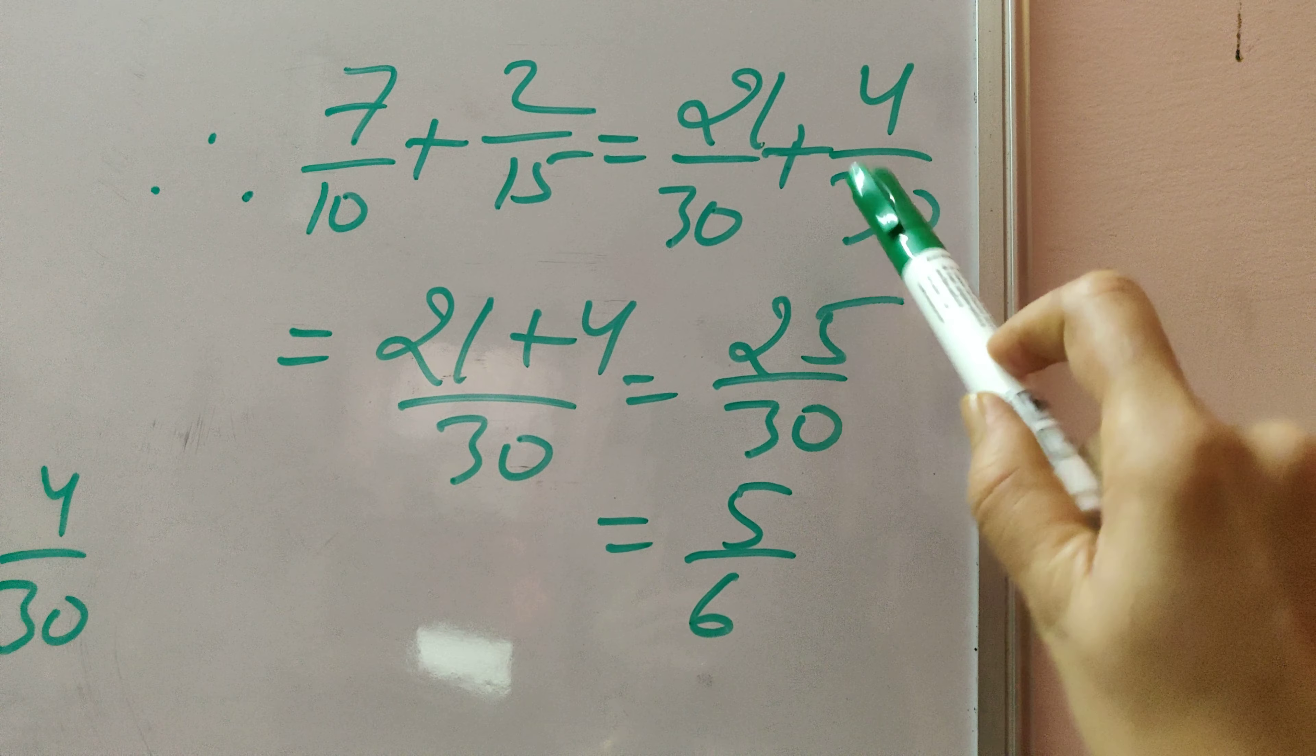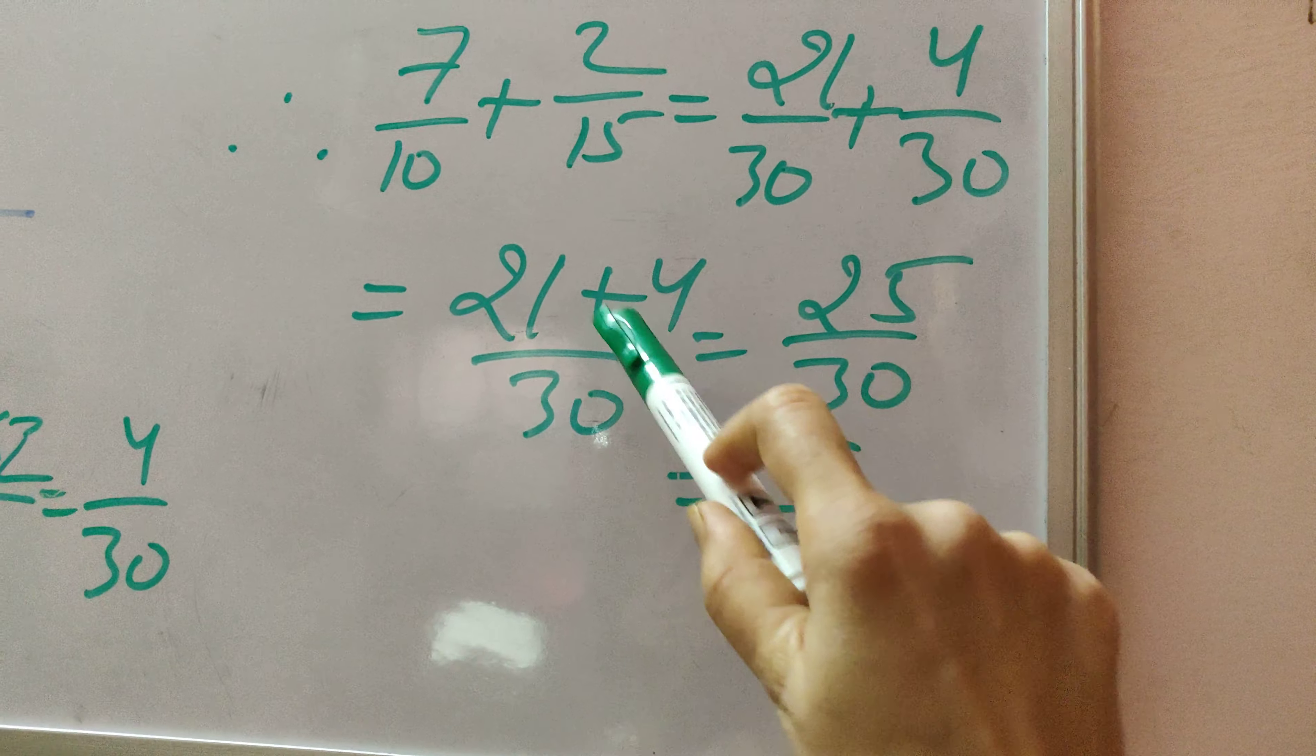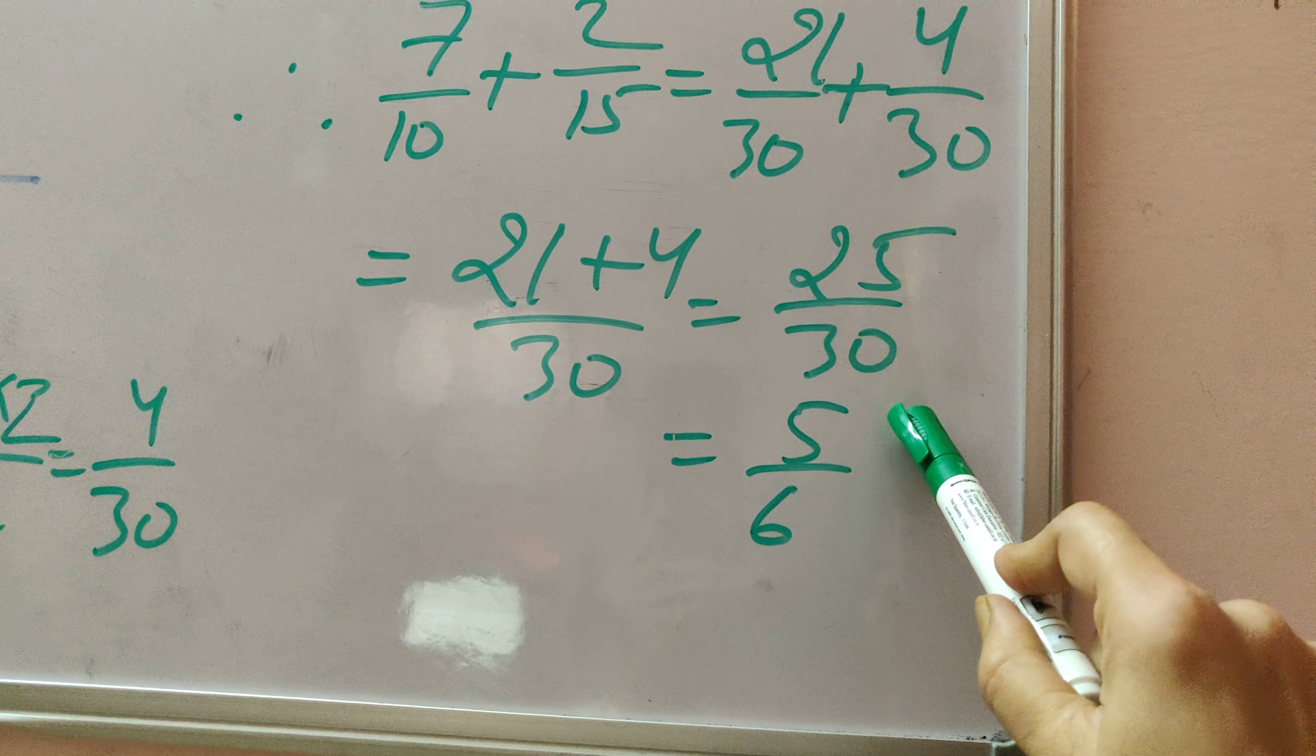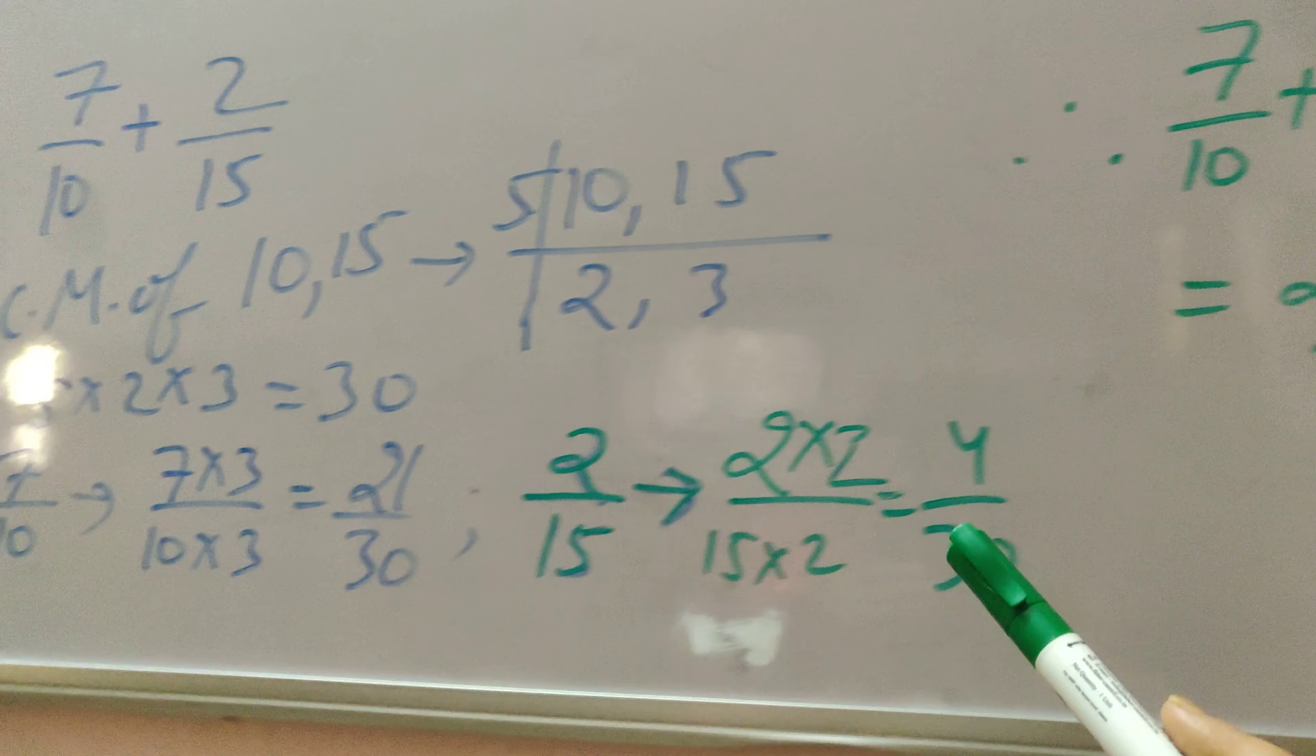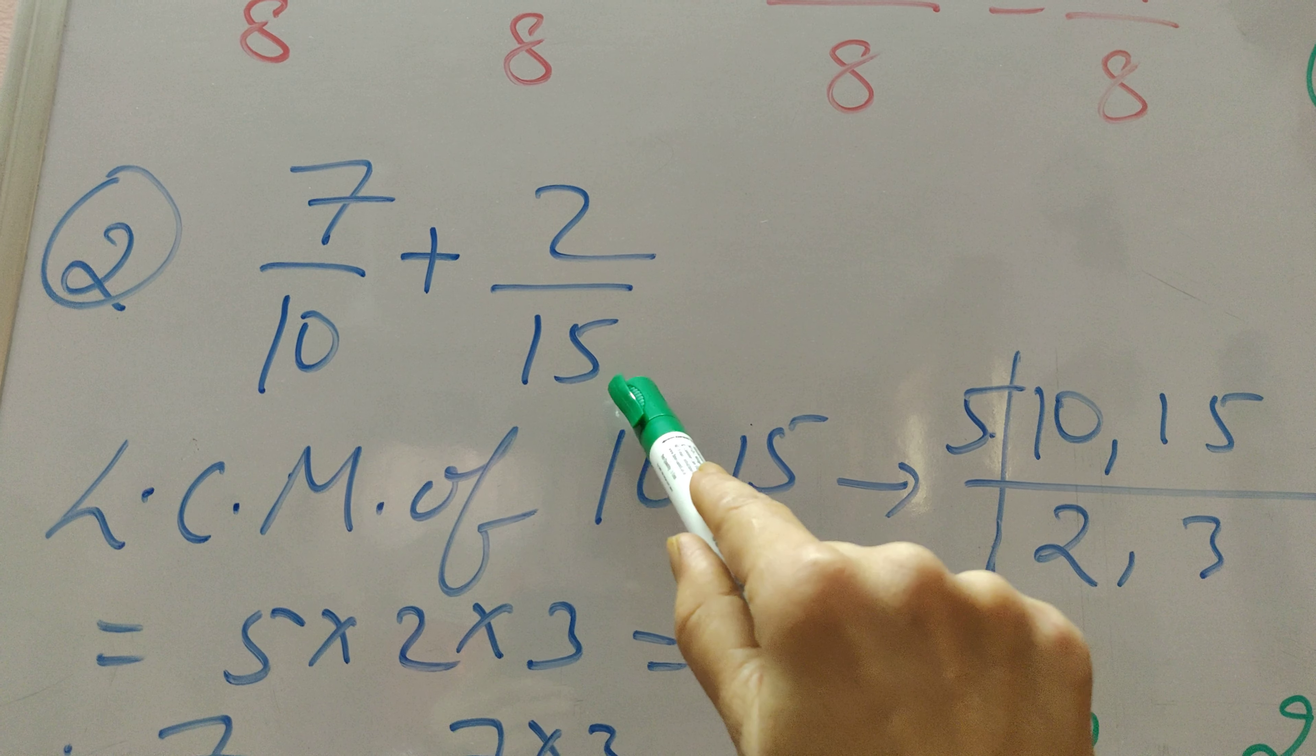So students, what you can do now is 21 plus 4 by 30, because now we have a common denominator. We can just add it like this: 21 plus 4 by 30. This will give you 25 by 30. So the answer will be 5 by 6 when we are adding two fractions with uncommon denominators.